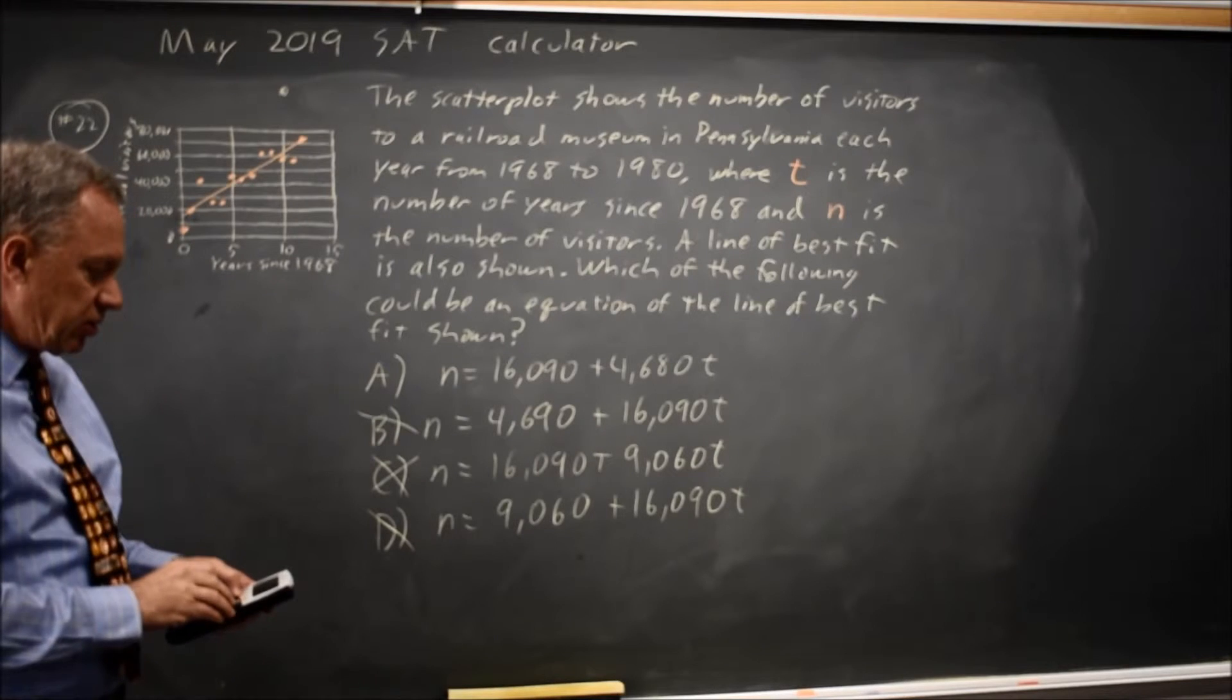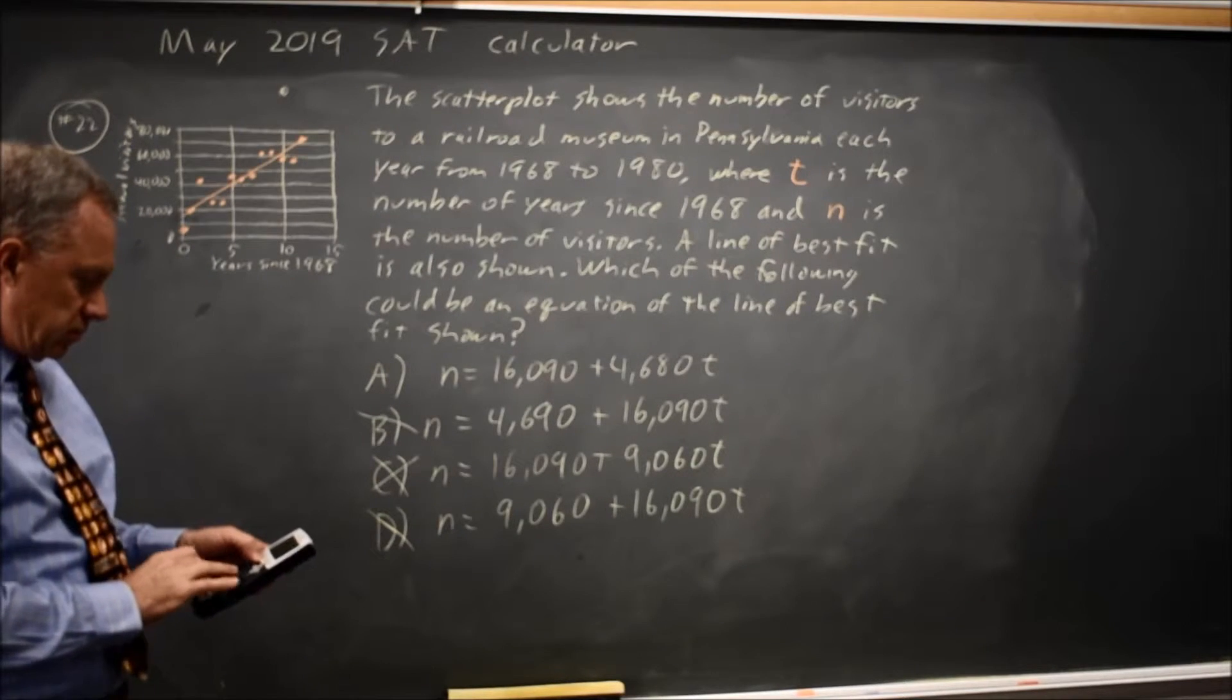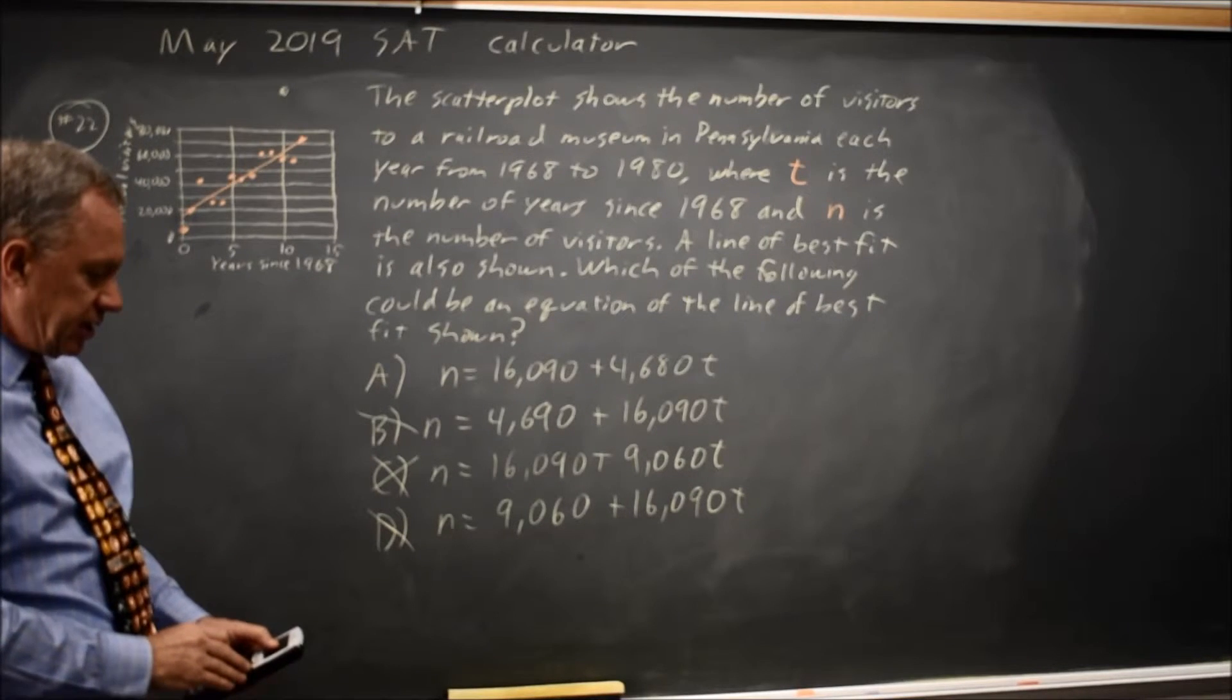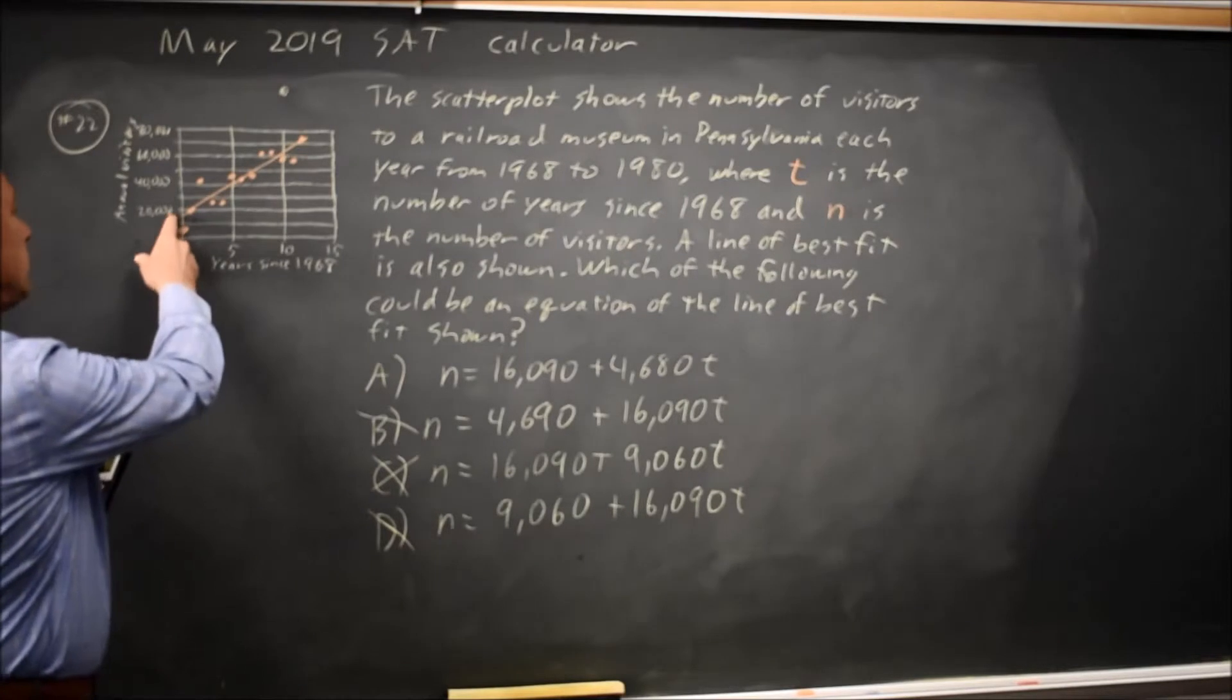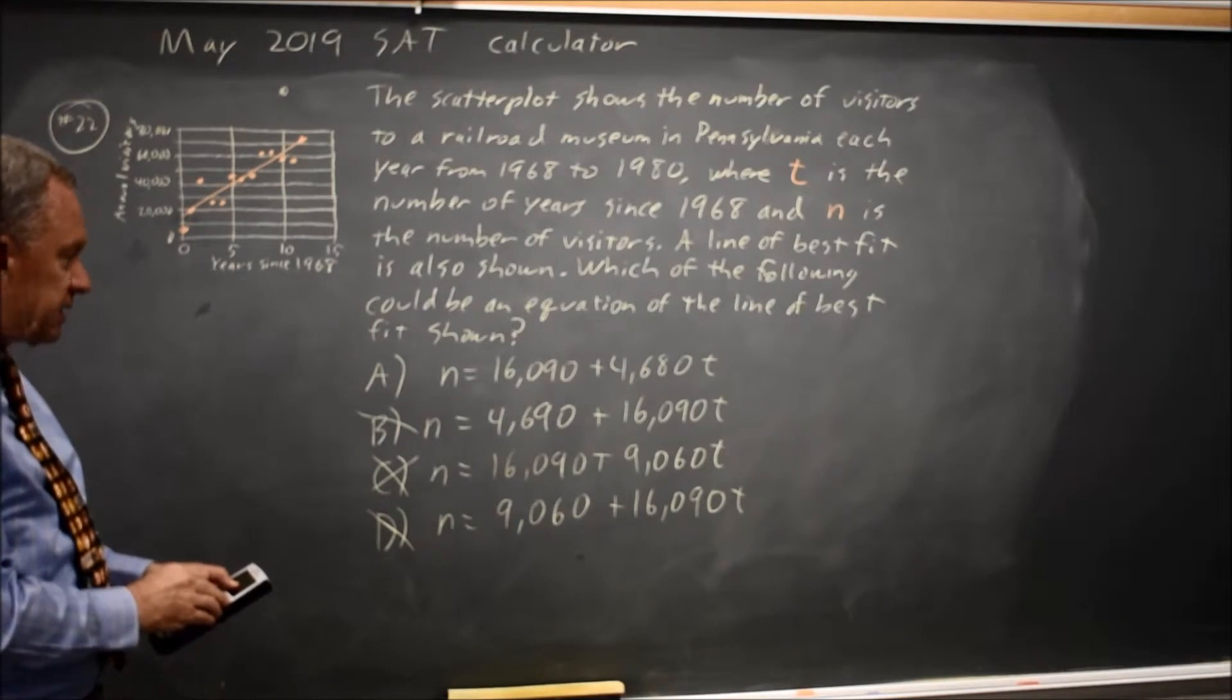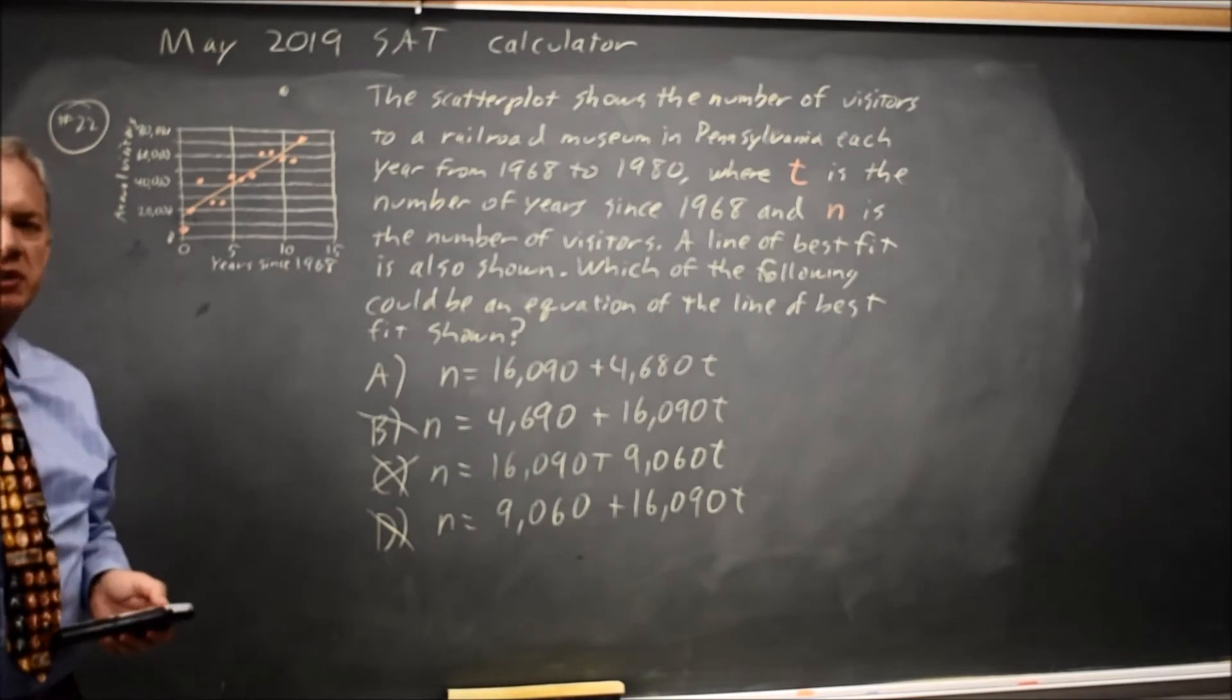If I change that slope to 4,680, now at t equals 0 I still have 16,090 which is compatible with the graph. And at t equals 10 I get 62,000 which is believable for the graph that does fit the line of best fit.